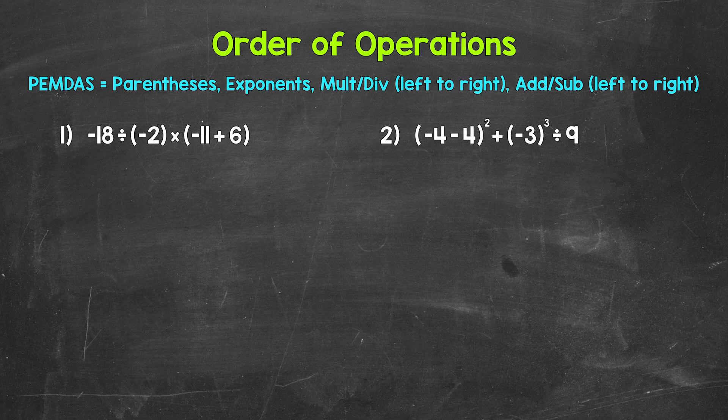Starting with number 1, where we have negative 18 divided by negative 2 times, and then in parentheses, negative 11 plus 6, end parentheses. Let's work through the order of operations to break this problem down. Do we have anything to do within parentheses? Yes, we have negative 11 plus 6. So let's start there.